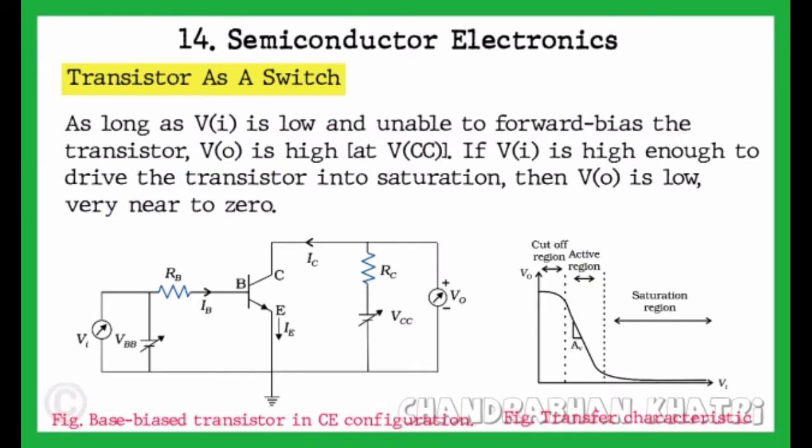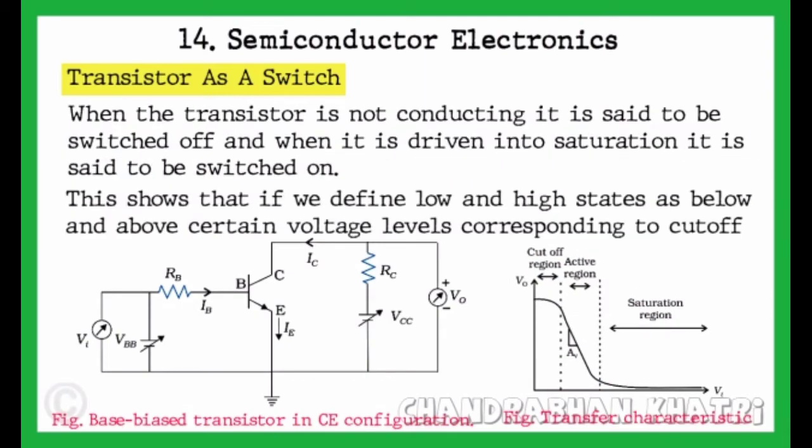As long as VI is low and unable to forward bias the transistor, V0 is high at VCC. If VI is high enough to drive the transistor into saturation, then V0 is low, very near to zero. When the transistor is not conducting, it is said to be switched off, and when it is driven into saturation, it is said to be switched on.